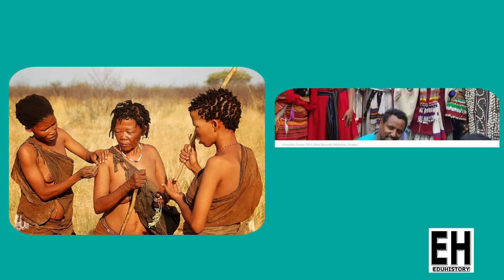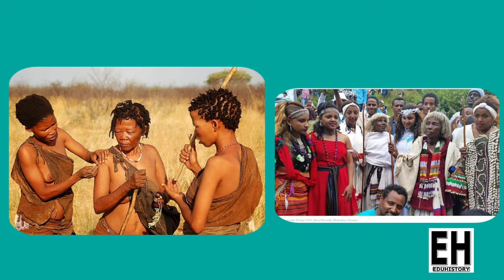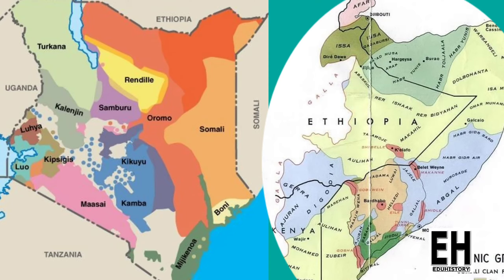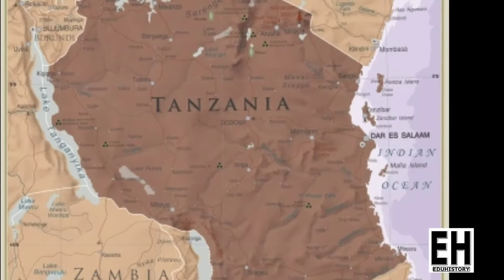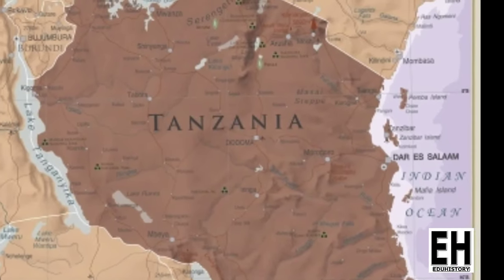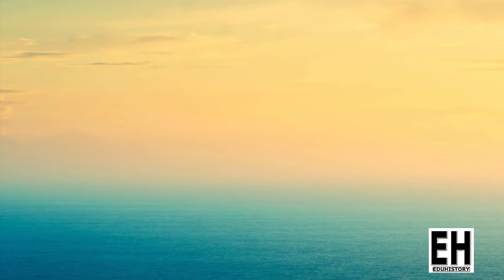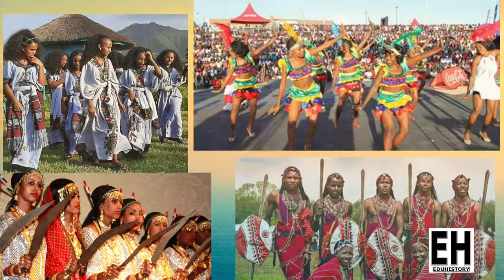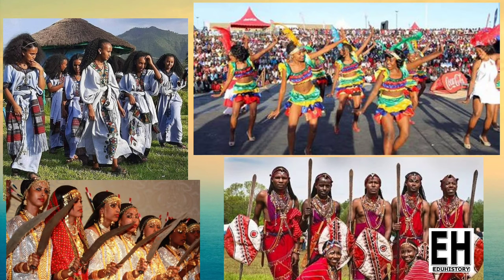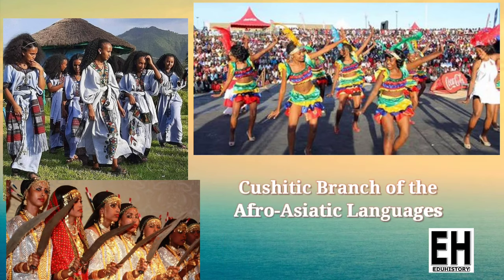Their people can be found both in Eastern and Southern Africa. Eastern Africa is populated by 160 different ethnic groups or more. Depending on the method of count, most of the peoples of Eritrea and Ethiopia, and some of those in Tanzania and Kenya, speak languages belonging to the Cushitic branch of the Afro-Asiatic languages.